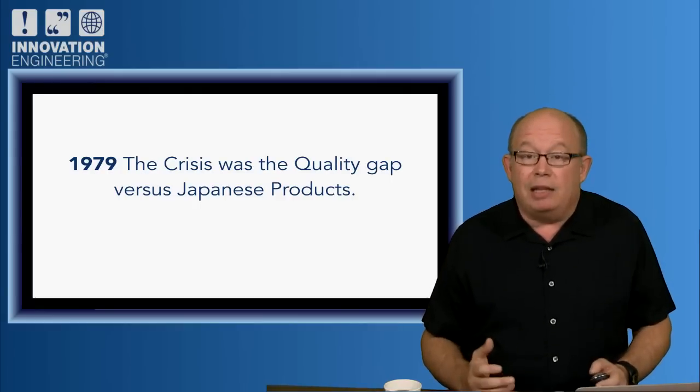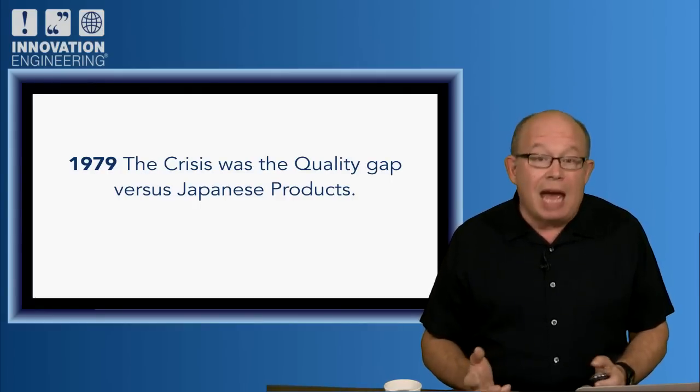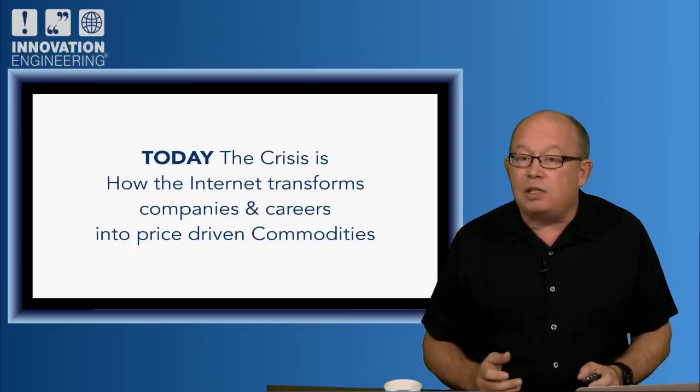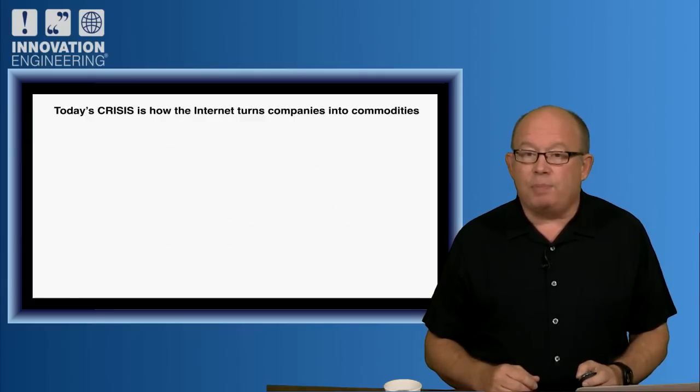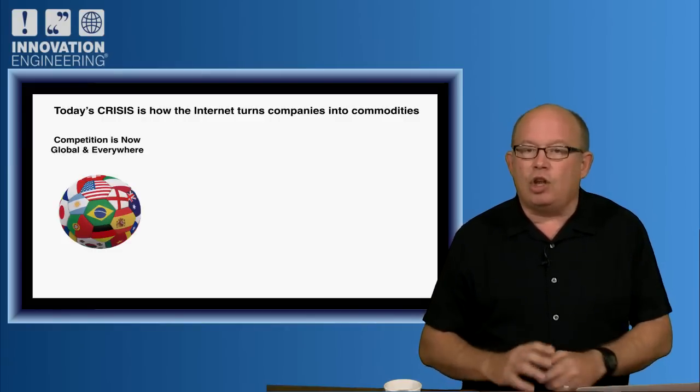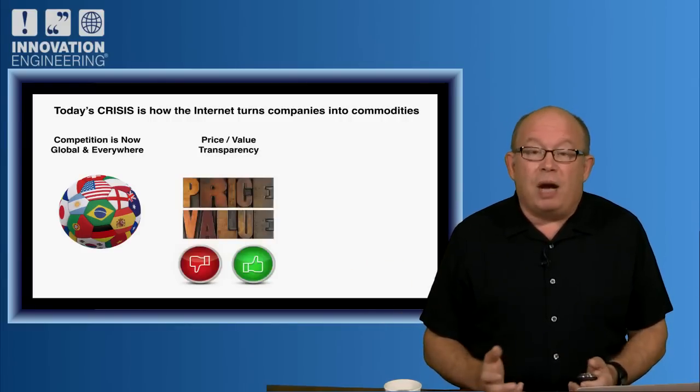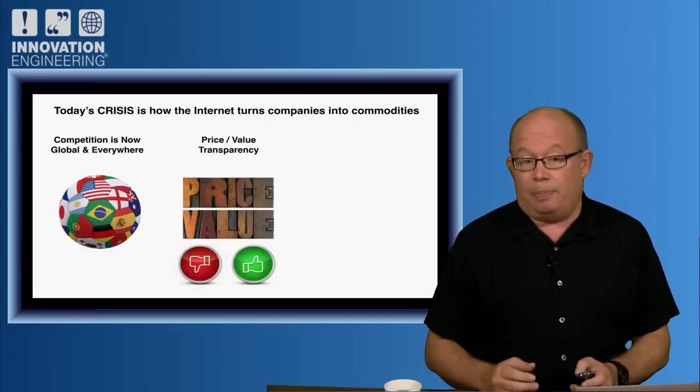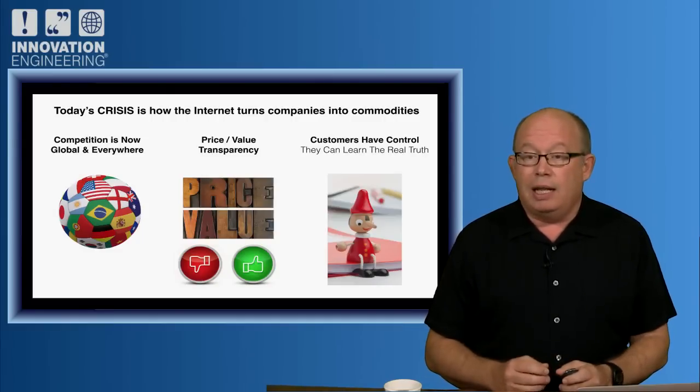In 1979, the crisis was the quality gap versus Japanese products. Today, the crisis is how the internet transforms companies and careers into price-driven commodities. The internet's power is unbelievable. It's created competition, global and everywhere. It creates price value transparency. Customers know exactly what they're getting and have far more control than they've ever had before.